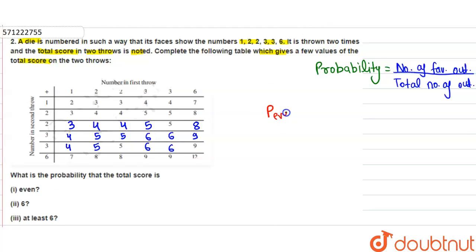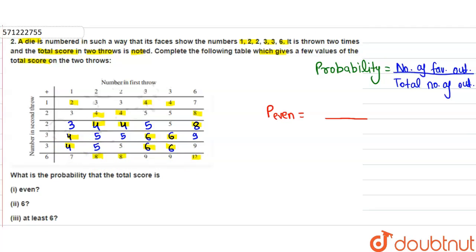Now we have to find out the probability of even. The probability of even equals the number of favorable outcomes divided by the total number of outcomes. Counting the even numbers in this table, we get 18 even numbers. The total number of outcomes is 36, so the probability of even is 18 divided by 36, which equals 1 by 2.